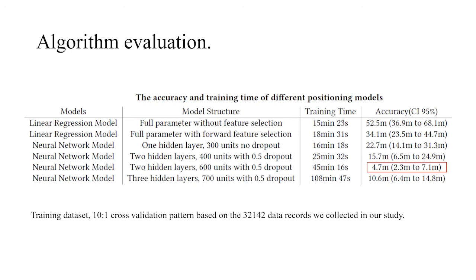After we choose the model, we train the model and get the final results. The algorithm evaluation shows the accuracy of these models range from 4.7 to 52.5 meters. The best model is a neural network model which has two hidden layers, 600 units with 50% dropout, and the accuracy is 4.7 meters.